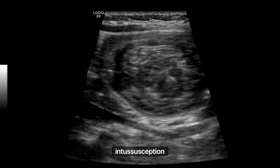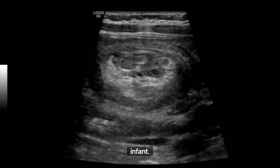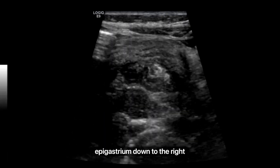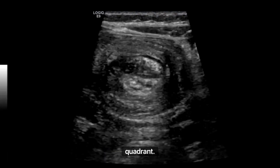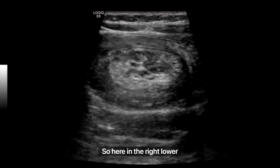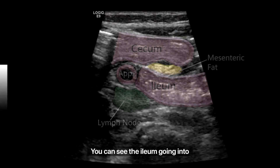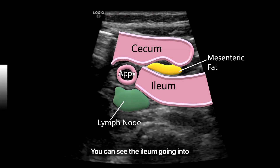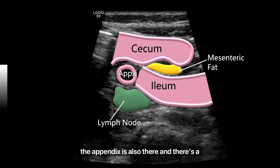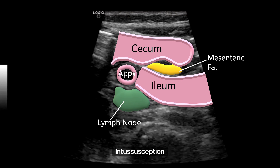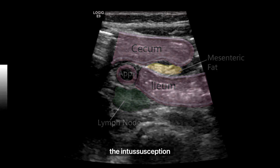Here we have a case of intussusception in an infant. I'm sweeping from the epigastrium down to the right lower quadrant. Here in the right lower quadrant, going slower, you can see the ileum going into the cecum. There's some mesenteric fat, the appendix is also there, and there's a lymph node. Almost every time you scan an intussusception, there will be lymph nodes within the intussusception.